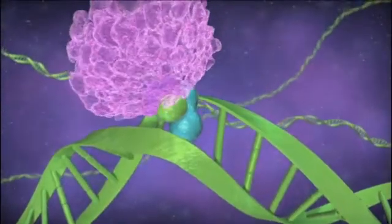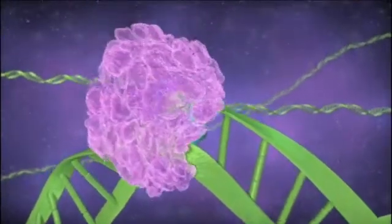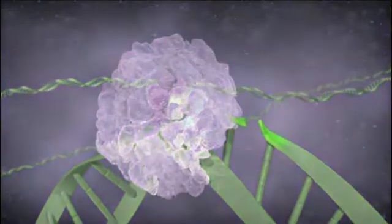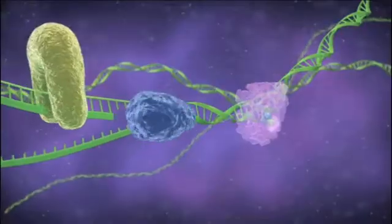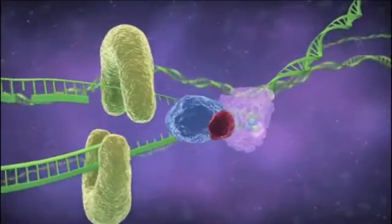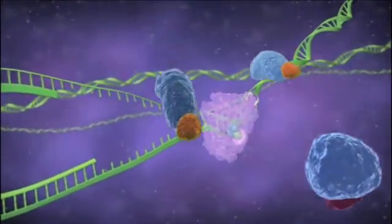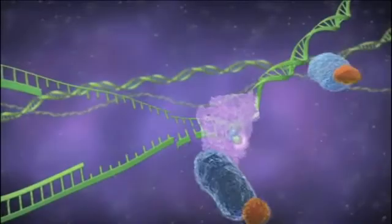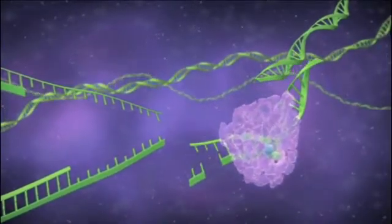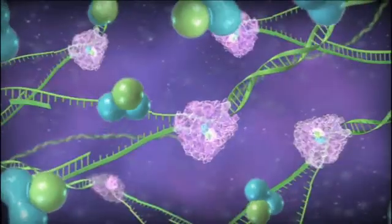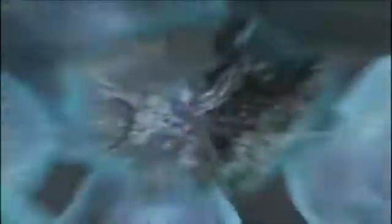The single strand DNA break generated by the formation of the ternary complex DNA-yondelis-XPG will stall the normal performing of the replication fork. The homologous recombination system will try to repair this stalling by inducing double strand DNA breaks. These lesions will finally induce an apoptotic cell death.